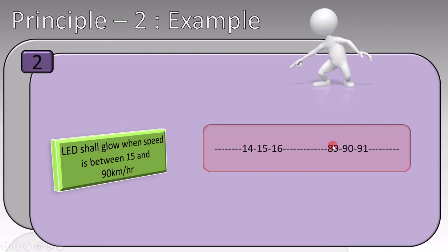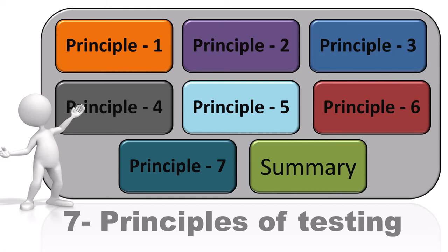So only by using 6 values, we can test if the software meets the customer's requirement. But it is also possible to test with all the values between 15 to 90, but that will consume a lot of time and effort. The boundary values serve our purpose. So this is the reason we say that testing every part of the feature is not feasible. Remember, it is possible, but not practical. Of course, if the customer asks us, then we can perform testing on all the values in between. Now, we will cover the third principle of testing.